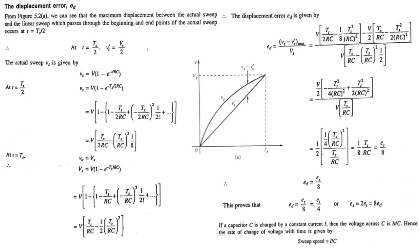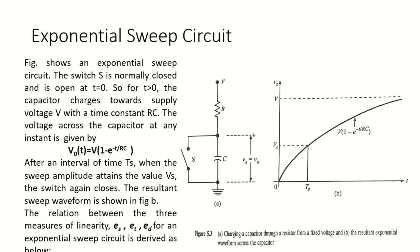If a capacitor C is charged by a constant current i, then the voltage across C is it/C, and hence the sweep speed equals i/C. So these are the parameters — et, es, and ed — derived for the exponential sweep circuit. In the next class, we will discuss the UJT sweep circuit.